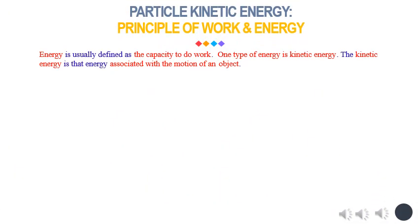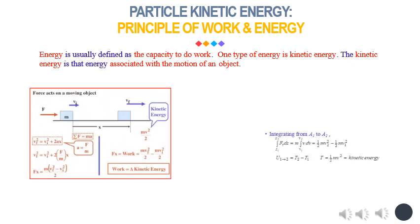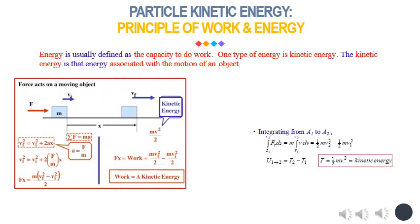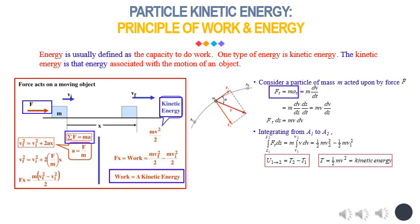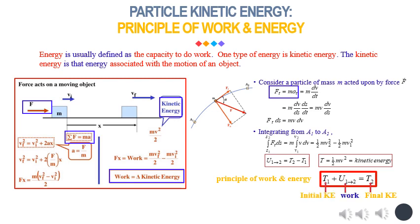Work is closely related to energy. The work-energy principle states that an increase in the kinetic energy of a rigid body is caused by an equal amount of positive work done on the body by the resultant force acting on that body. From Newton's second law, we derived the principle of work and energy, which states that we can obtain the kinetic energy at the final position by adding its kinetic energy at the initial position to the work done during the displacement: T1 plus U1 to 2 equals T2. The units of work and kinetic energy are the same: newton-meter or joule.